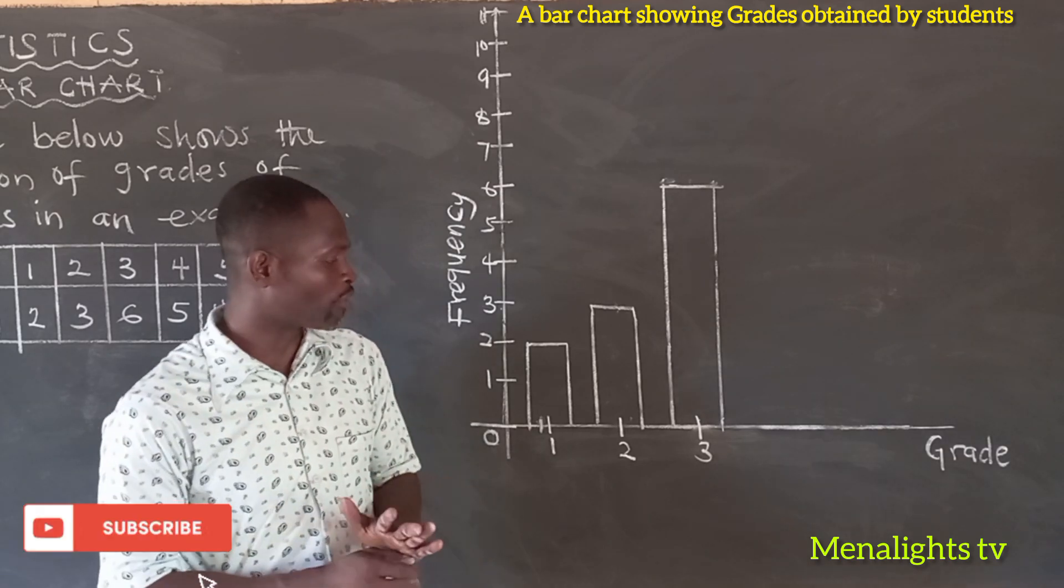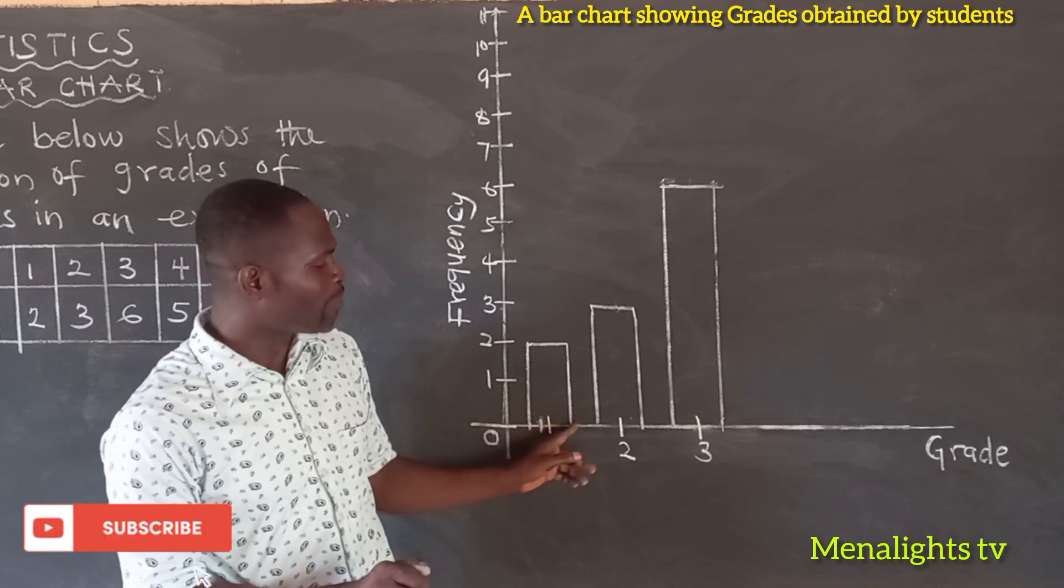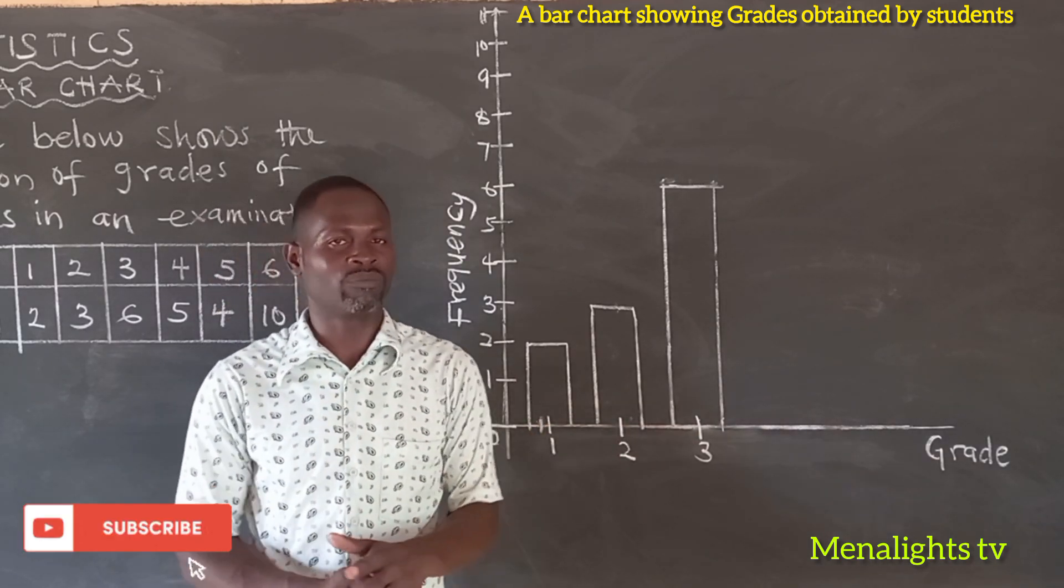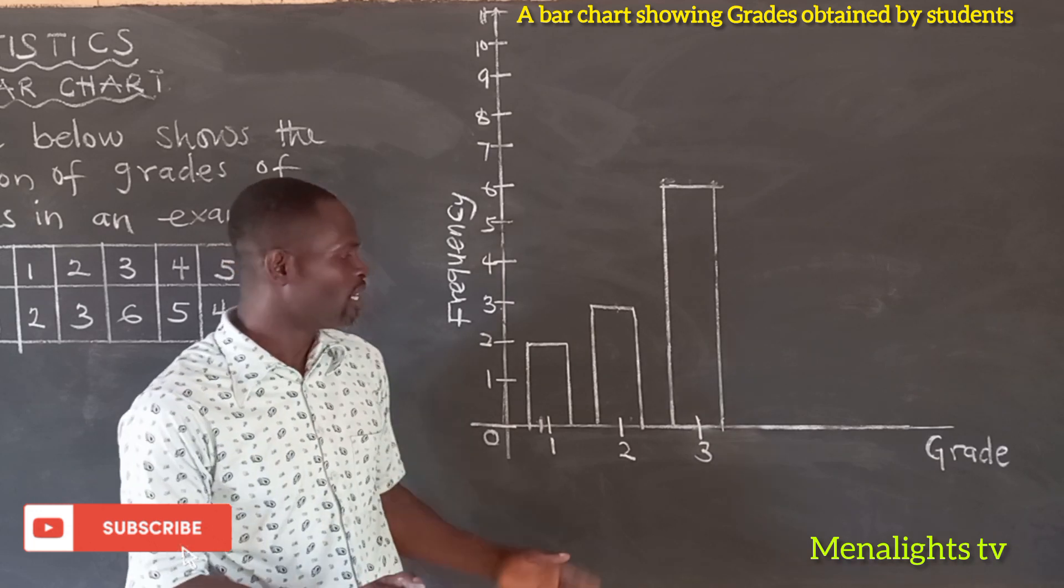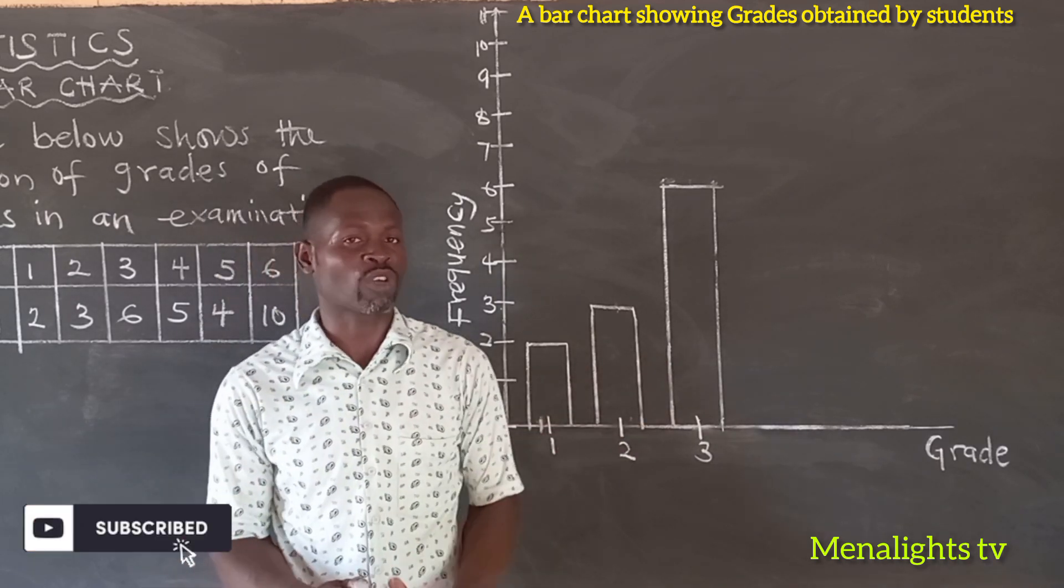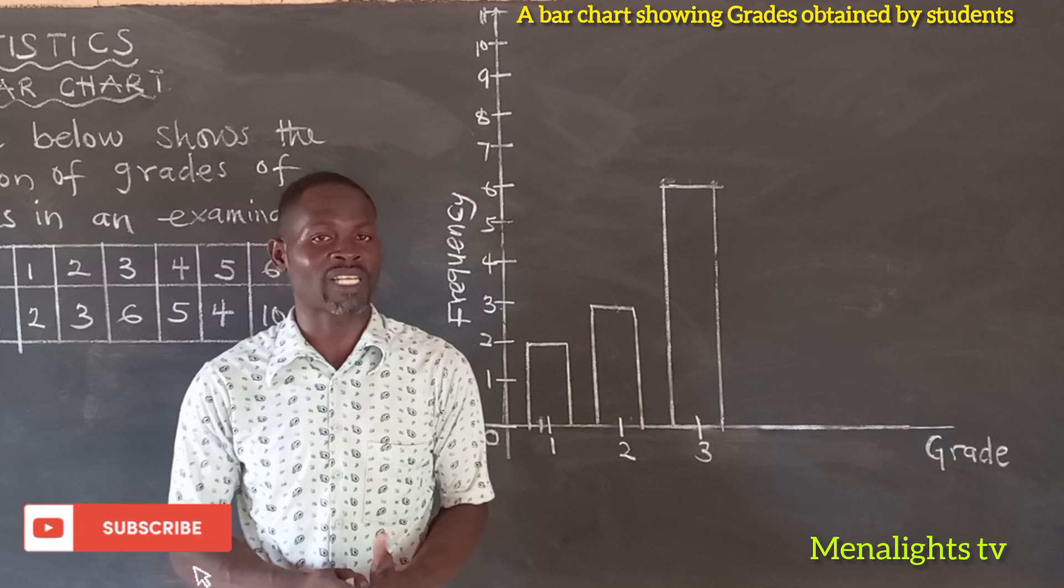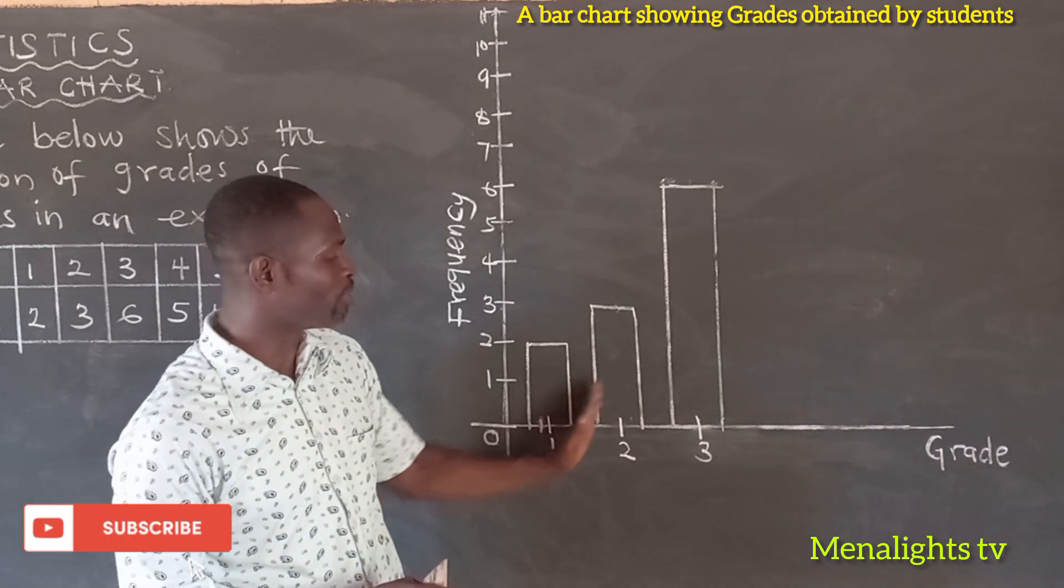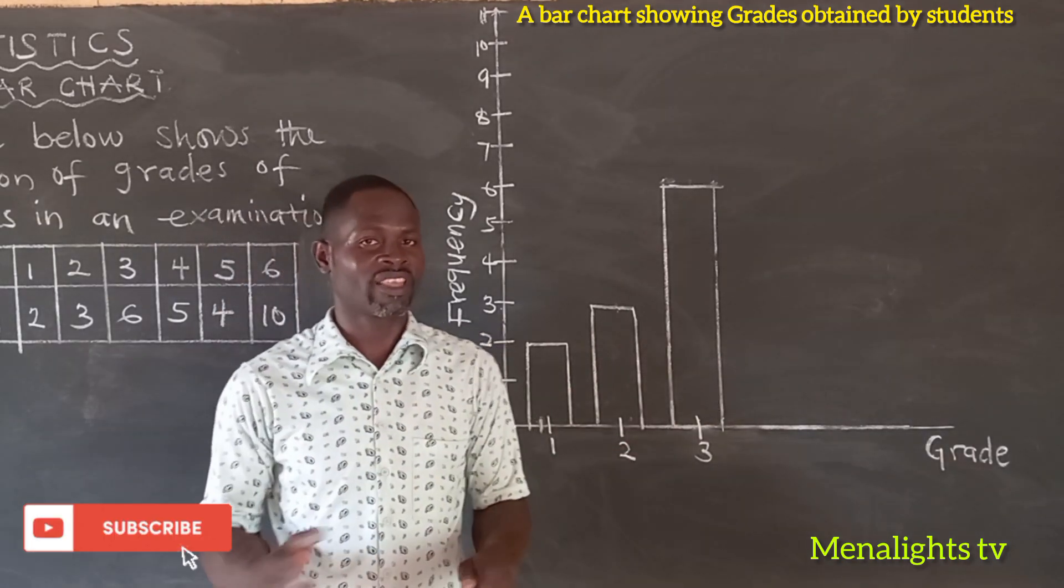Now what you have to take into consideration is that the distance between the bars are the same. The bars are having the same distance. And the size of the bars must also be the same. The distance between the bars must also be the same.